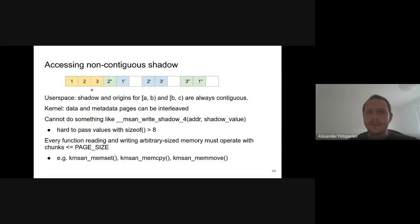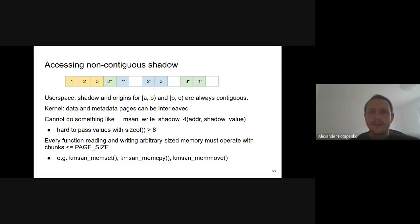The biggest difference between user-space and kernel instrumentation is that for every two contiguous memory ranges in user space, their shadow and origin ranges are contiguous as well — this is not the case in the kernel. Even if three physical memory pages follow one another, there may be gaps between their metadata pages, or other data may be between them. This means we cannot simply inline writes to shadow as done in user space, as they may corrupt other data. That's why for the kernel we introduce functions that return metadata pointers, and every function operating on arbitrary-sized memory must operate on chunks smaller than one page to avoid data corruption.